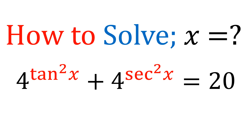Here we have one trigonometric exponential equation: 4 raised to the power tan²x plus 4 raised to the power sec²x is equal to 20. We have to find the solution for x.